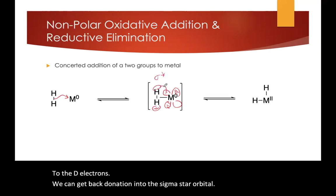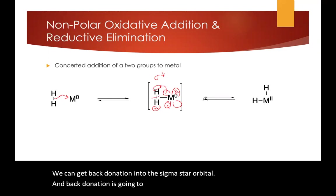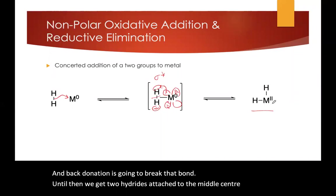And back donation is going to break that bond. And so then we get two hydrides attached to the metal center. And again, the metal oxidation state goes up by two.